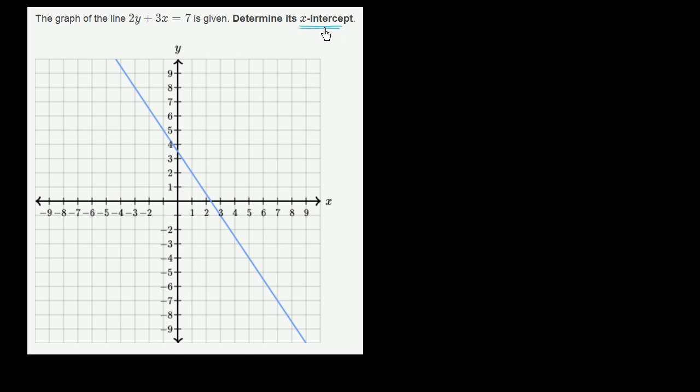So the x-intercept is the x-value when y is equal to 0, or it's the x-value where our graph actually intersects the x-axis. Notice, right over here, our y-value is exactly 0. We're sitting on the x-axis. So let's think about what this x-value must be.